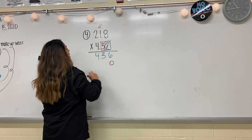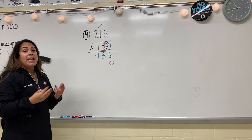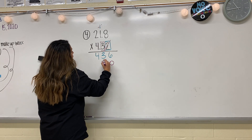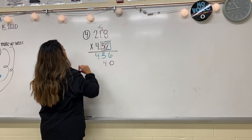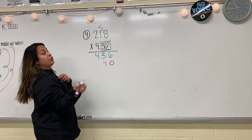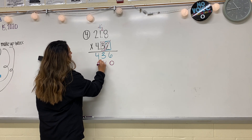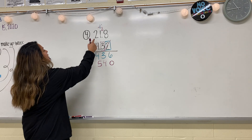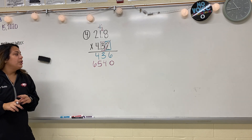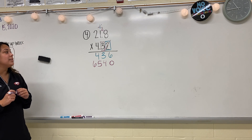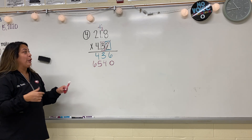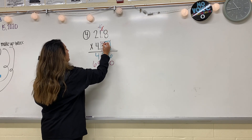Now I'm going to box my three so I know that's the number I'm focused on right now. Eight times three is 24 — put my four, carry my two. One times three is three; three plus two is five. And then two times three is six. So we have multiplied 21 and eight tenths by three. I have nothing else to multiply by three, so I'm moving on to the next place value. I'm going to mark out the numbers I don't need anymore.